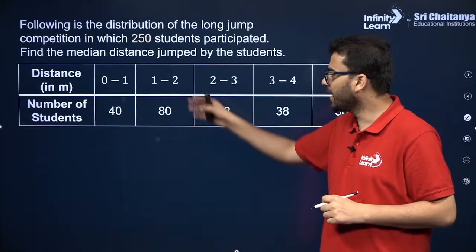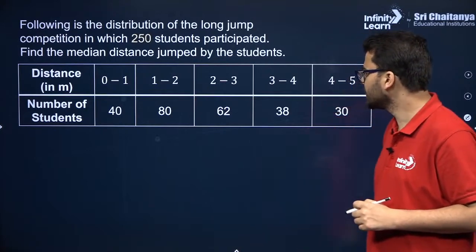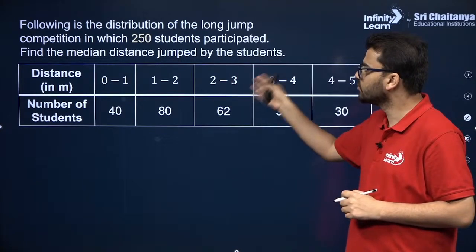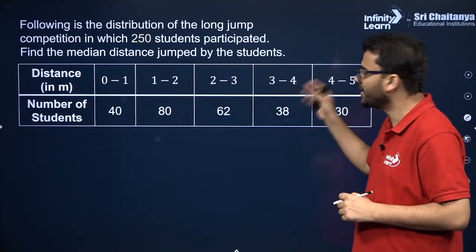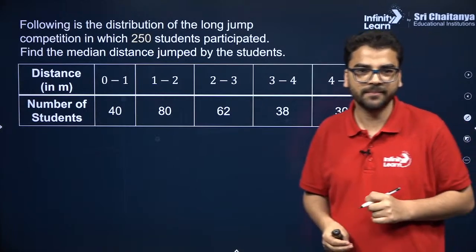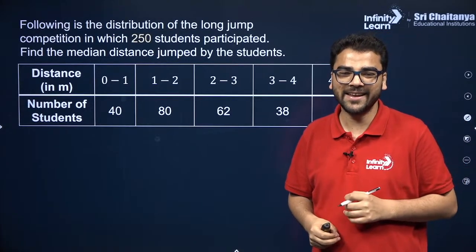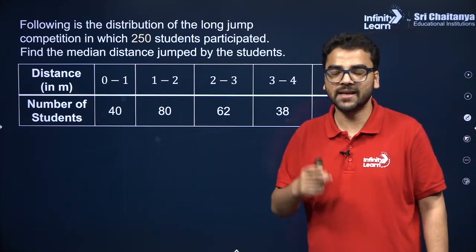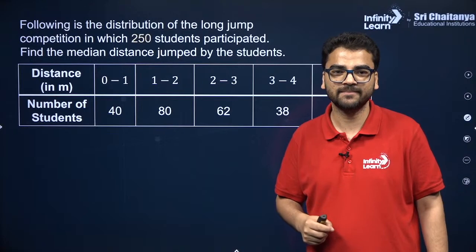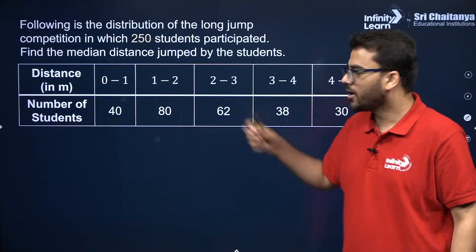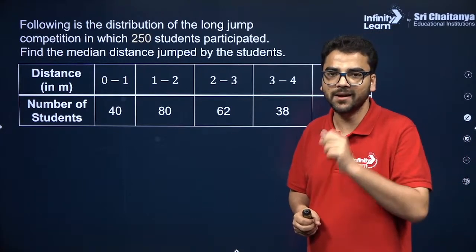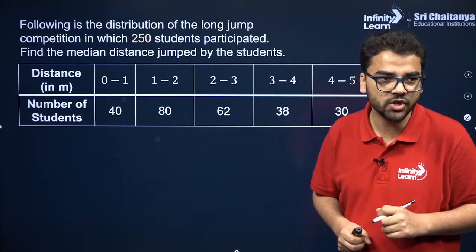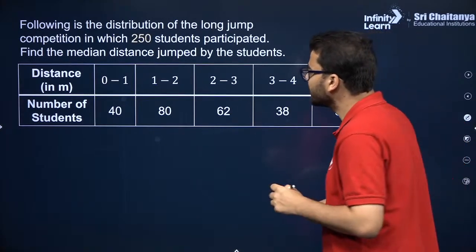Let us move on to the next question. Can you find the median? The following is the distribution of a long jump competition in which 250 students participated. You have to find the median distance jumped by these students in meters. In order to find the median, the very first thing is to identify the median class.